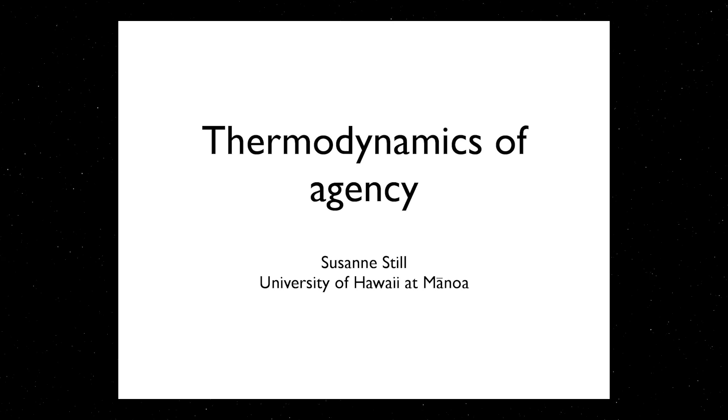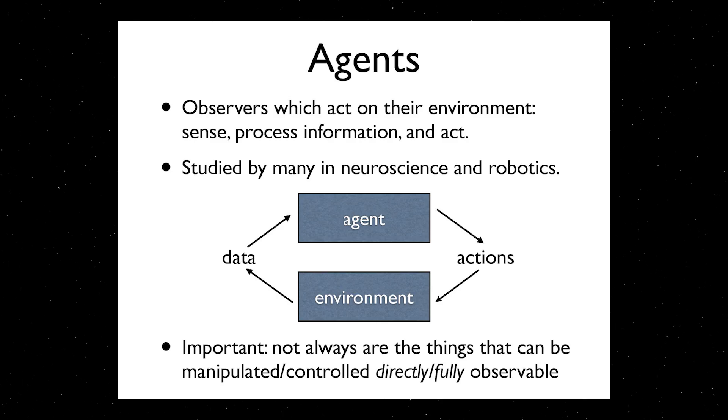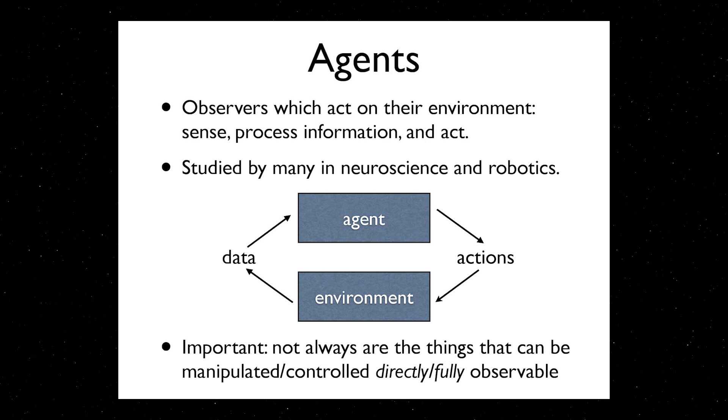Agents, let me take a practical view. Agents are some kind of entities that obtain data from some kind of other entities — you may or may not call this an environment — process that data, and then act. Those actions typically have consequences on the very things that generated the data in the first place. This is sometimes called the perception-action loop, and it's widely studied in neuroscience and robotics for obvious reasons.